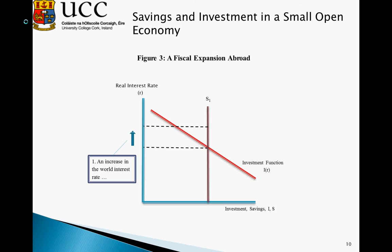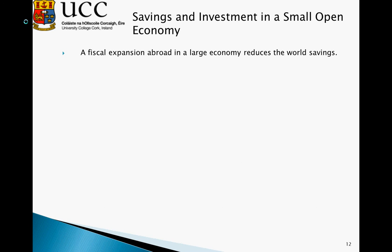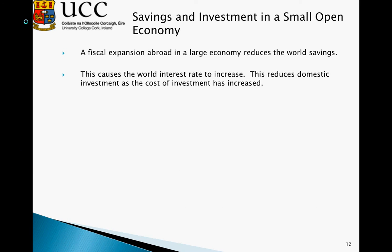However, investment now falls to where the new interest rate line crosses our investment function. We now see investment being less than savings. In this instance, when investment is less than savings, a reduction in investment leads to a trade surplus — S is now greater than I. So fiscal expansion abroad in a large economy reduces world savings, causing the world interest rate to increase, which reduces domestic investment as the cost of investment has increased.